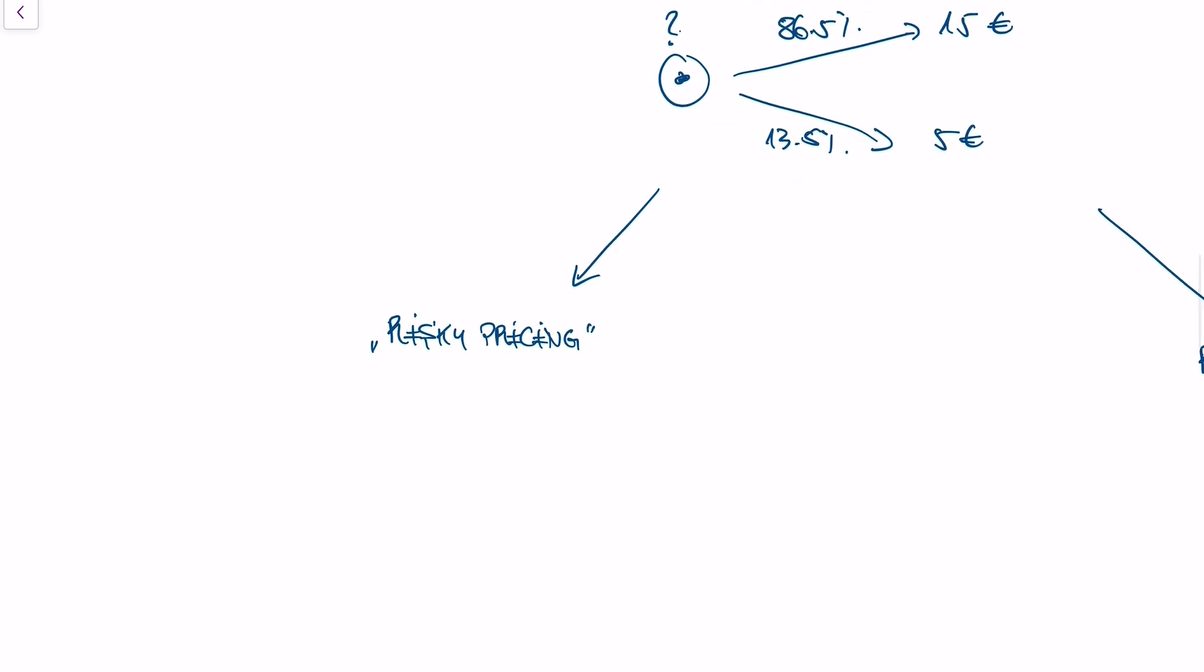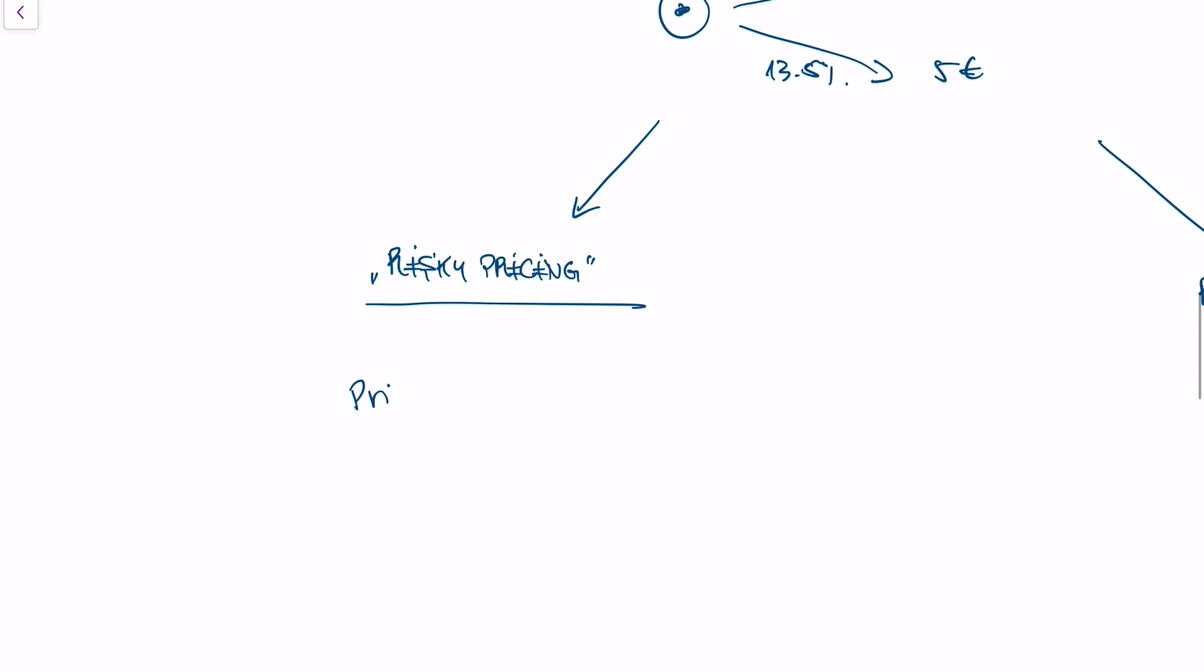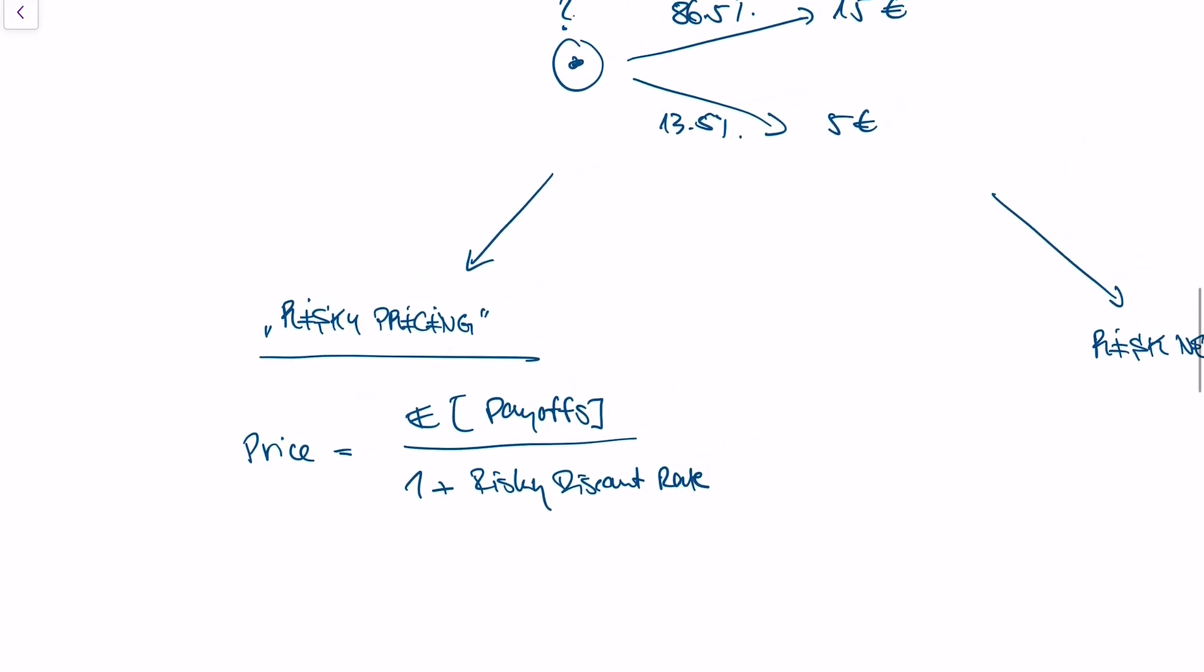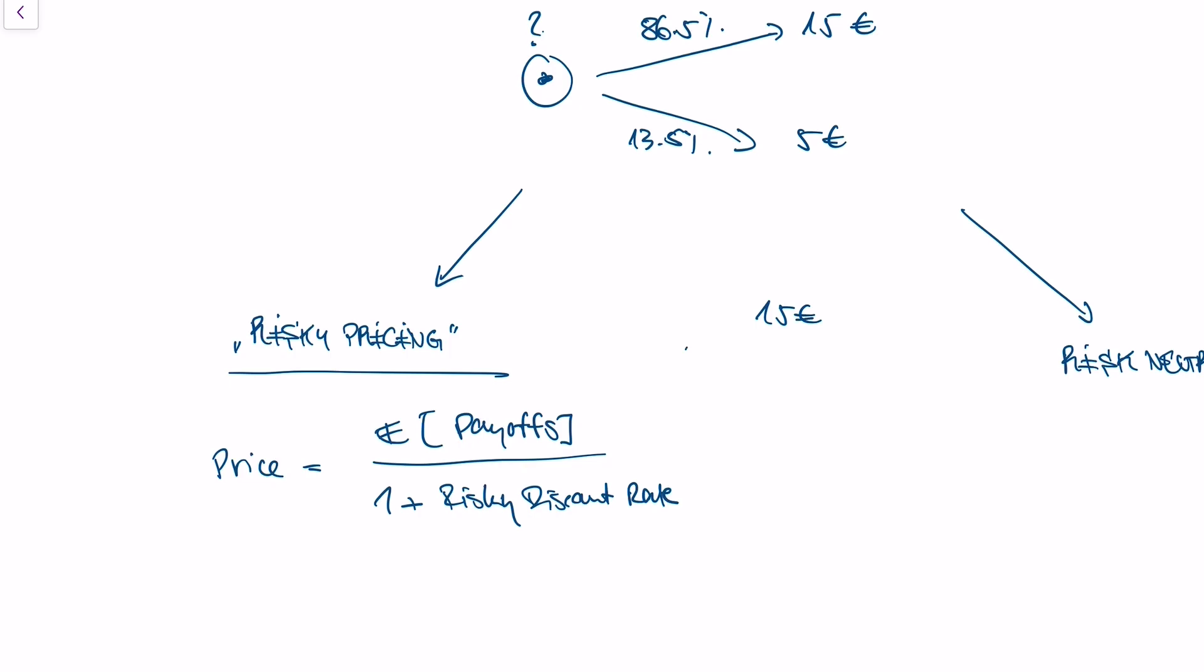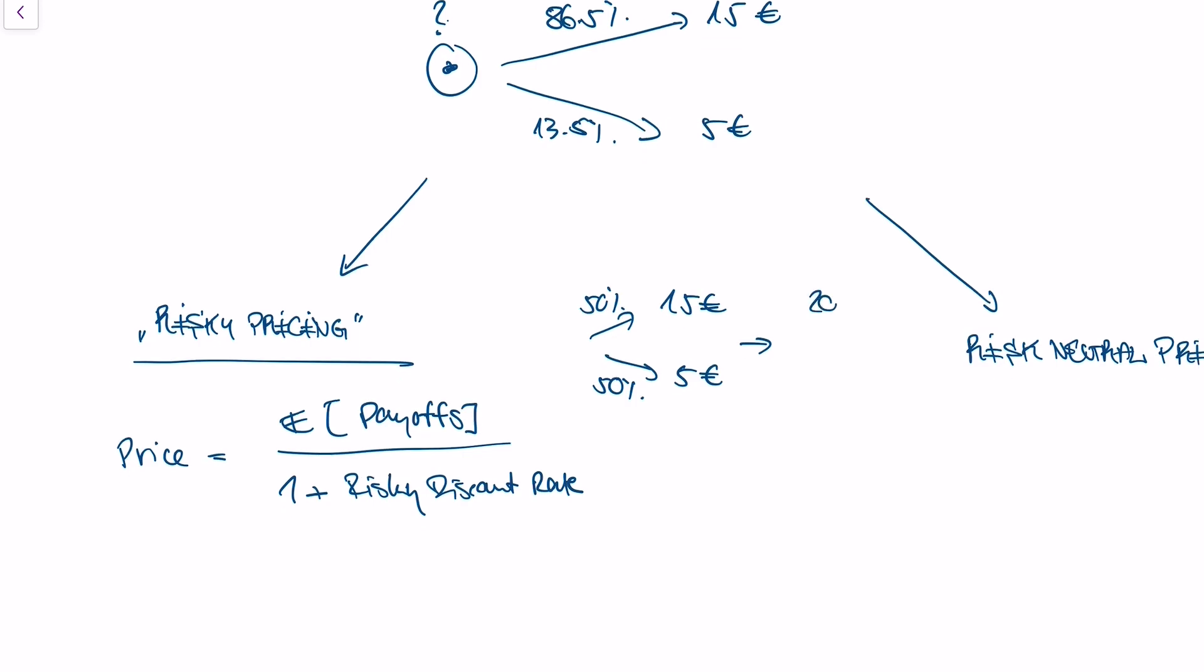The first approach is the risky pricing approach. This approach tells us that the price of this asset is given by the expected value of the payoffs divided by 1 plus the risky discount rate. This risky discount rate basically reflects how risky an asset is. If we have an asset that pays 15 euros with 50% probability and 5 euros with 50% probability, then this will have less of a discount rate than an asset that pays 20 euros with 50% probability and 0 euros with 50% probability. Because this asset here is more risky, it will have a higher discount rate than this asset.